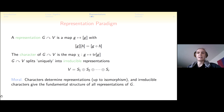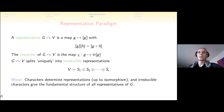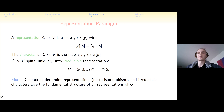In general, V splits as a direct sum of subspaces preserved by the action of G — these are sub-representations. The fundamental theorem of representation theory says that characters determine representations: two representations are isomorphic if and only if their characters are equal. Remarkably, you only need the trace to characterize representations. Furthermore, irreducible characters can be used to build all representations in a canonical way.